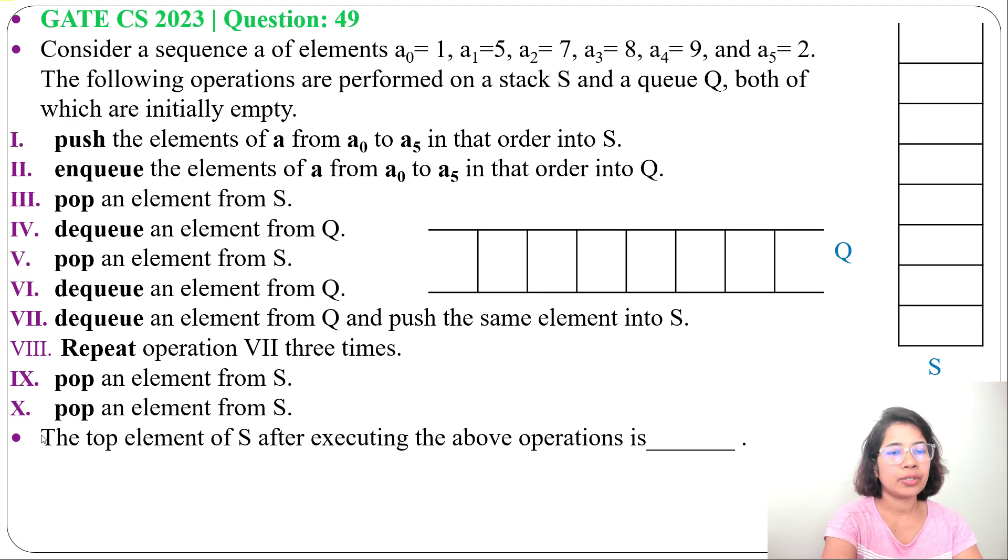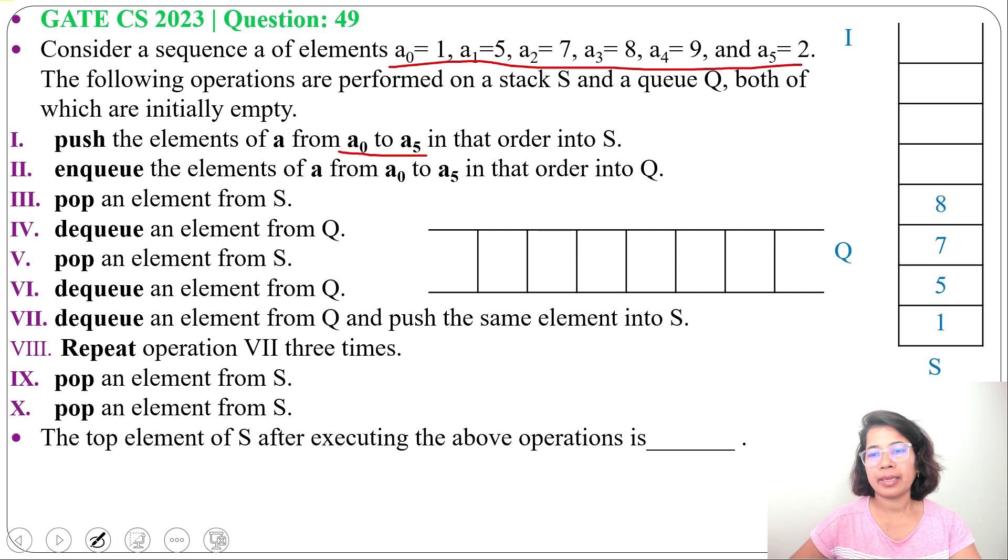Let's do operation 1 by 1. Operation 1: push the elements of a from a0 to a5 in that order into S. So we will push a0 to a5 into stack S. First we will push a0, that value is 1, into S. Next we will push 5 into stack, next 7 into stack, then a3 equals 8 into stack, then a4 equals 9, we will push 9 into stack, then 2 into stack.